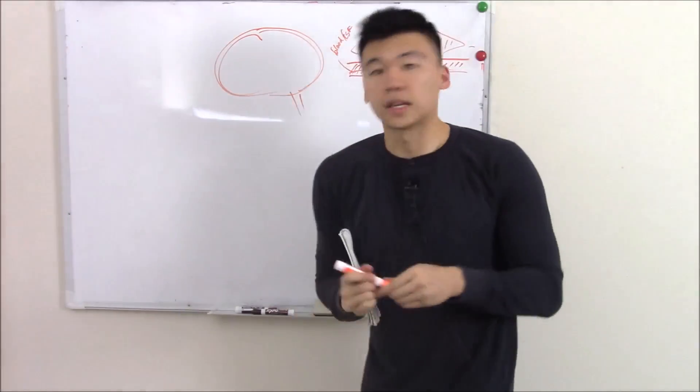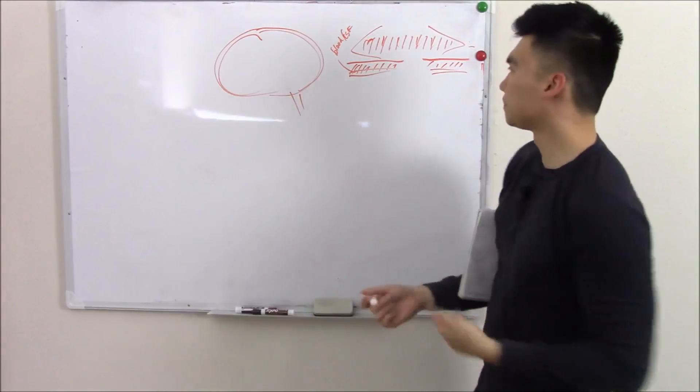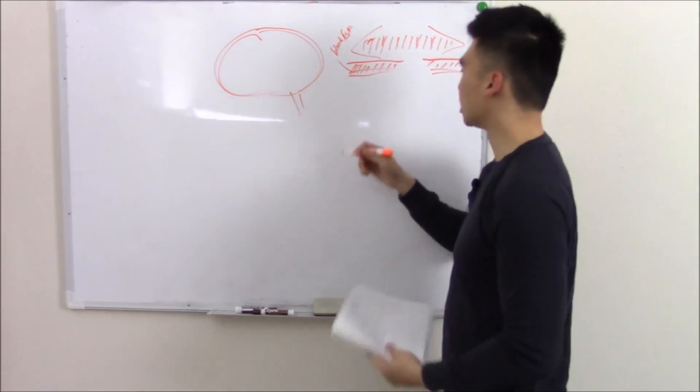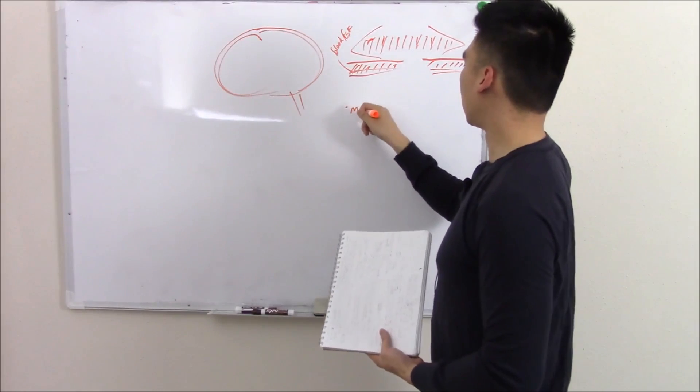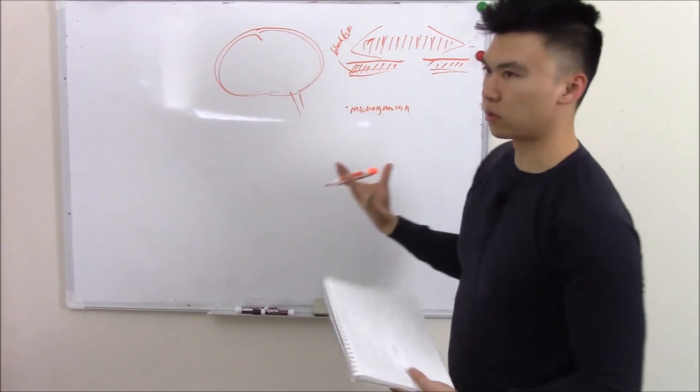So today we're gonna talk about infections of either your brain or your meninges, starting with your meninges first. You get an infection of your meninges when microorganisms get in contact with your meninges. Now how can they get into contact?